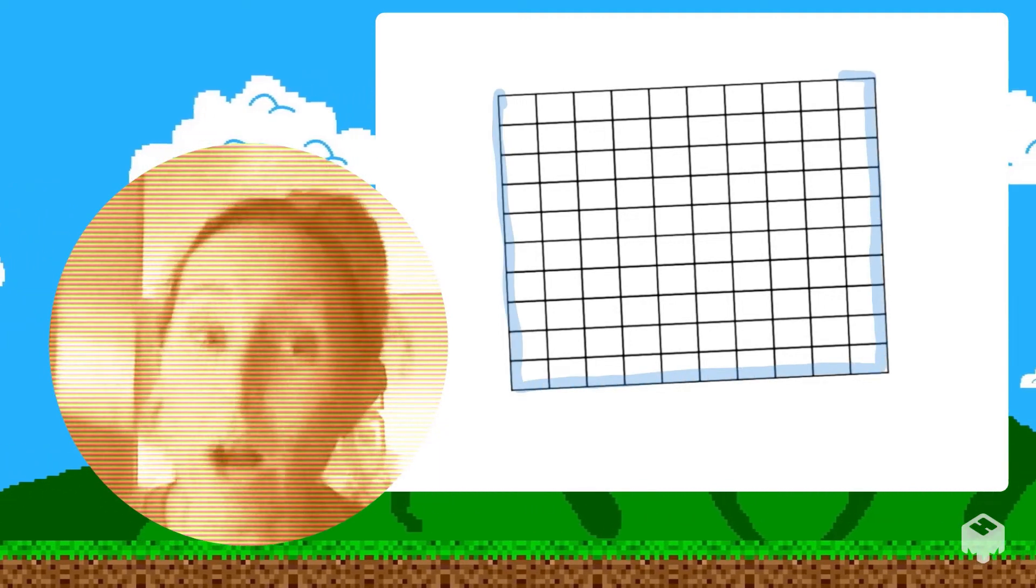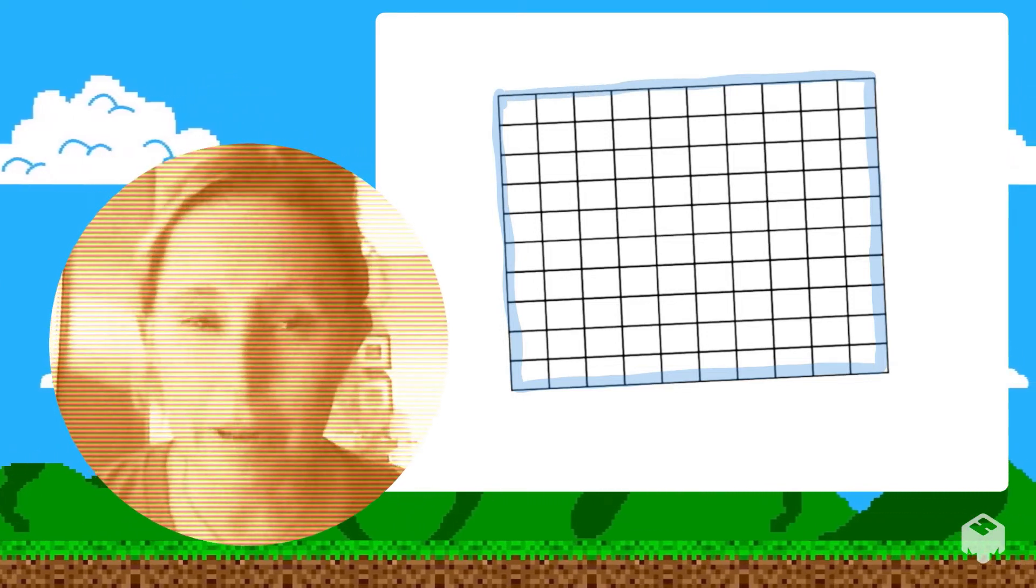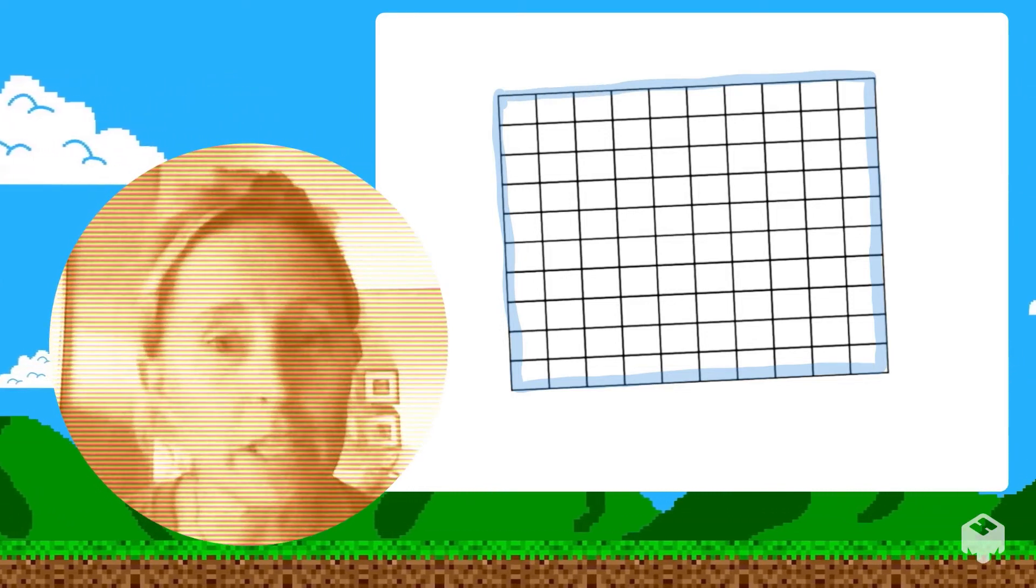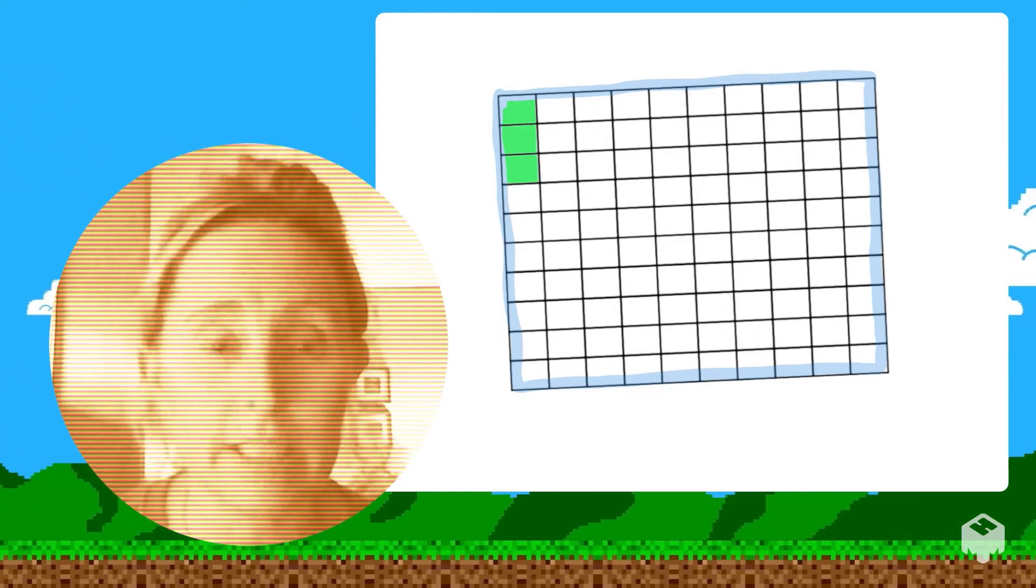So here I've got my one whole flat. I've broken it into a hundred pieces and I have three of them. Look at this common mistake: some kids will just put 0.3. Can you see what's wrong with that?